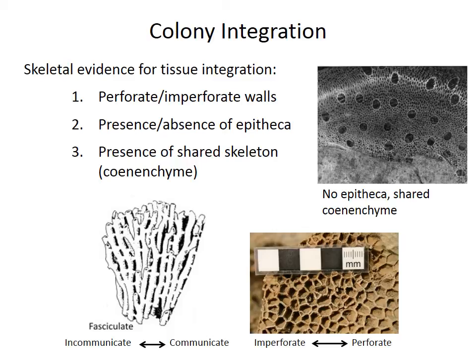Some corals have even reduced or eliminated the walls altogether, so we can look at the presence or absence of the epitheca — the outer corallite wall. And finally we can look to see if there is shared skeleton, often called coenenchyme, between the corallites.